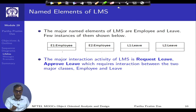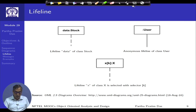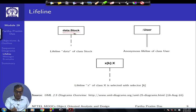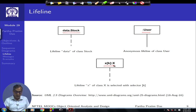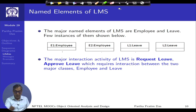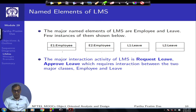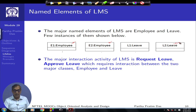These are called named entities in UML — you have specific names for classes and lifelines. From the LMS example: E1 is an object of Employee, E2 is another specific employee, L2 is a specific leave, and so on. Lifelines would run from these objects.